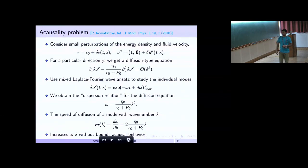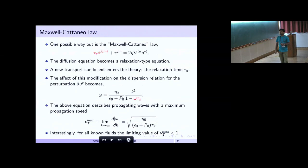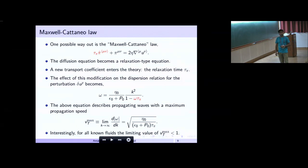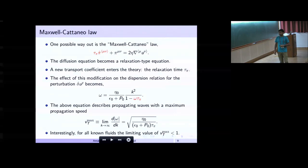This is the acausal behavior. One way to rectify it is that instead of the constitutive relation that says the gradient instantaneously converts to a force, we add a relaxation term which gives a time scale over which this gradient relaxes to the shear force. Then the diffusion-type equation becomes a relaxation-type equation, and repeating the dispersion relation analysis, we get a fluid velocity that is bounded. For all known fluids, it's limited within one.